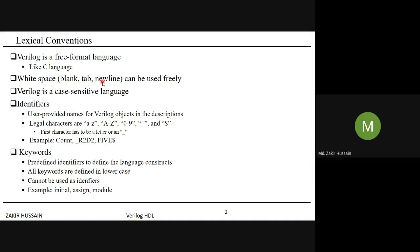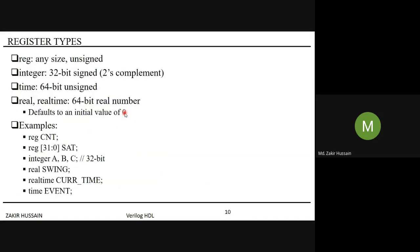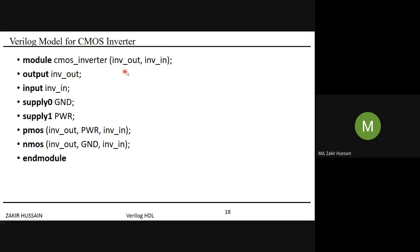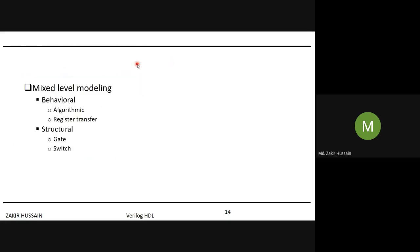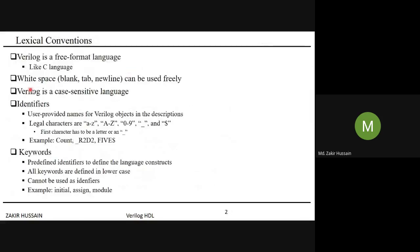For example, if you have an identifier like 'inv_out' followed by 'inv_in' and you leave a gap between them, it does not cause a problem — spaces are freely allowed anywhere. Blank spaces can be used wherever you feel like, and that will not cause any compilation issues in Verilog.